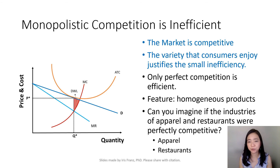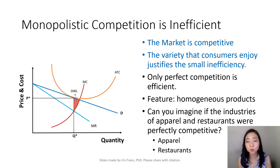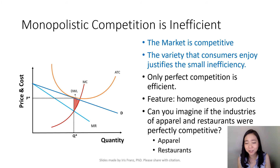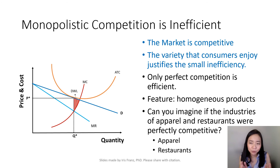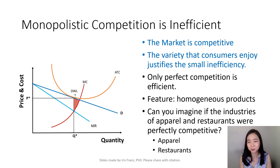Remember, only perfect competition is efficient, and one feature of perfect competition is homogeneous products. Can you imagine if industries like apparel and restaurants were perfectly competitive? For apparel, we would all be wearing the same outfit — like a white t-shirt and jeans. For restaurants, everyone would eat hamburgers and fries. That's very boring. So we still value variety, and the small inefficiency can be justified by the variety we enjoy. That's the reason we don't address the inefficiency in monopolistic competition.